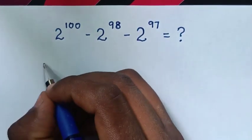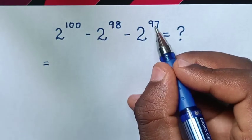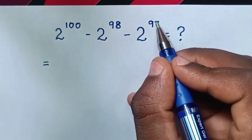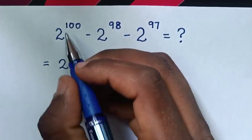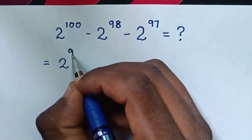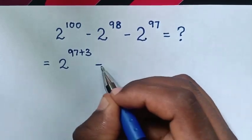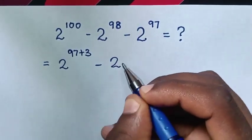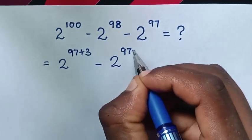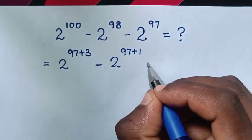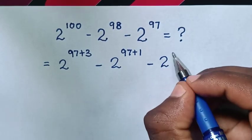So this is equal to: here 2 power of 98 is the smallest, so make power of 97 in common. So it will be 2 power of 100 is the same as 97 plus 3, then minus 2 power of 98 is the same as power of 97 plus 1, then minus 2 power of 97.